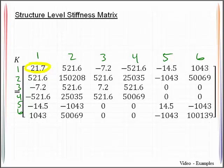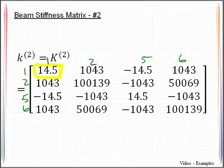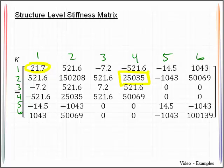In a very similar fashion, you would go through each of these individual terms. Say the 2,4—you would scan through both element stiffness matrices to see if you have a 2,4 term. Here's a 2,4 term there, but this one does not have a 2,4 term. That is why this value works out to be 25,035.